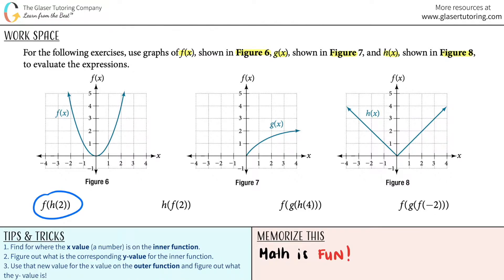Let's start with the first one: f of h of 2. The first thing you want to do is find where the x value is — which is the number on the inner function. Remember, with composite functions we always work from inner to outer. So between the f function and the h function, which one is the innermost one? It's going to be the h function. So we always start there and work our way outside. So the first thing we need to do is h of 2.